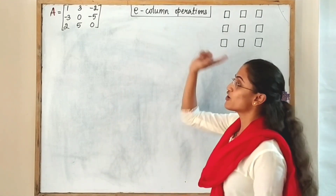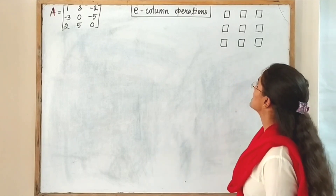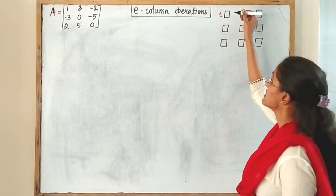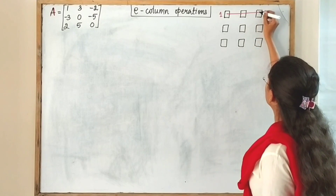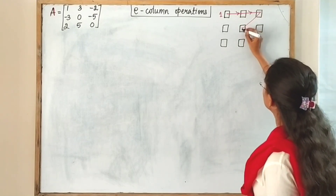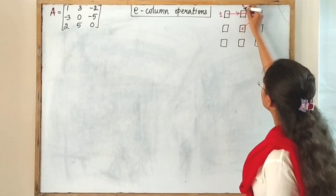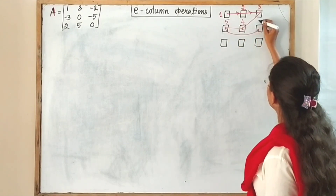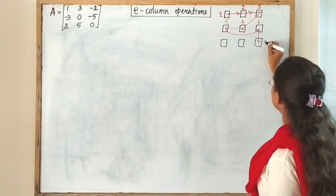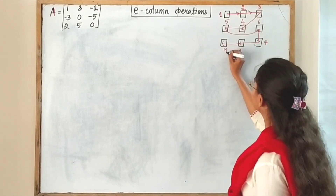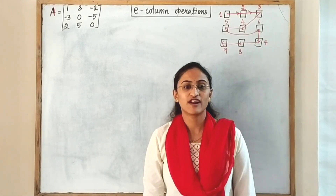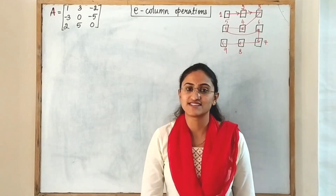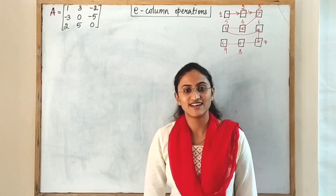In the similar fashion we can also find the inverse of a 3x3 matrix using elementary column operations. We also have a pattern for this. The first element should become 1, then following the same row the next element should become 1. This gives us steps 1, 2, 3, 4, 5, then coming back for 6, then 7, 8, and 9. If you follow this pattern and apply elementary column operations, you will get the inverse of a 3x3 matrix as simply as with row operations.